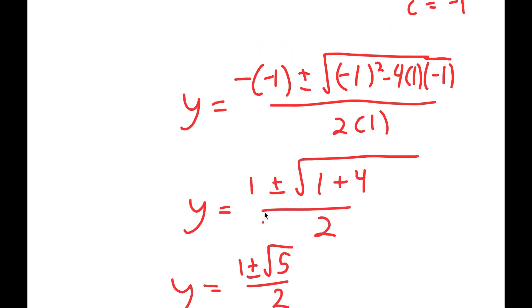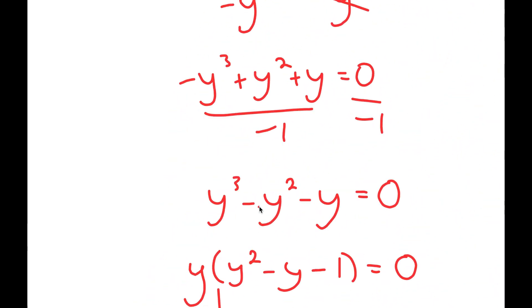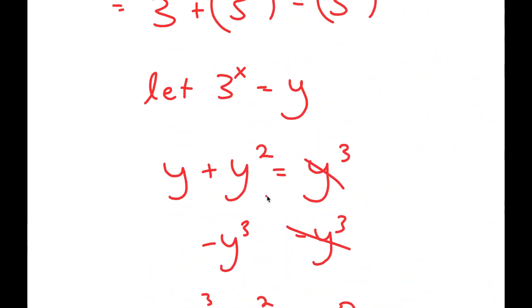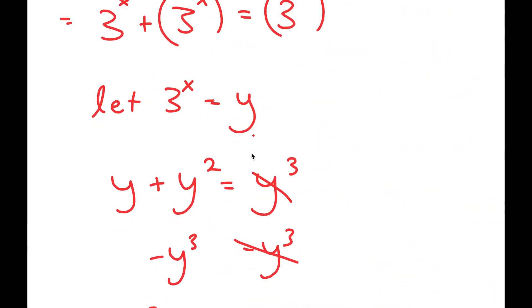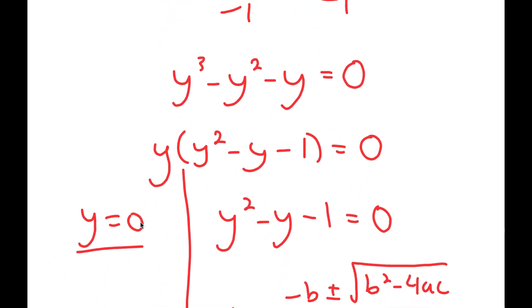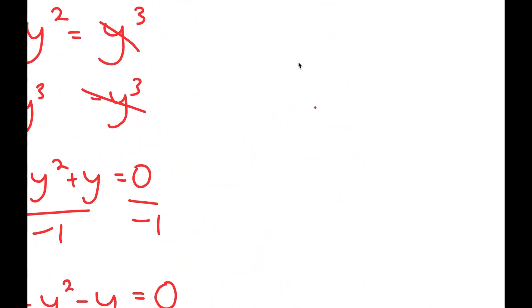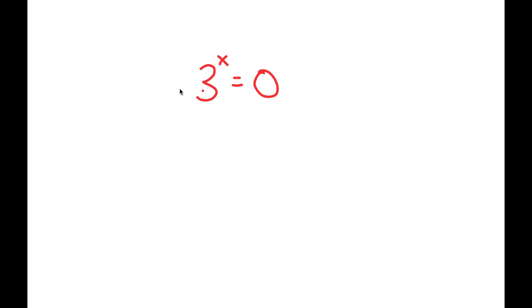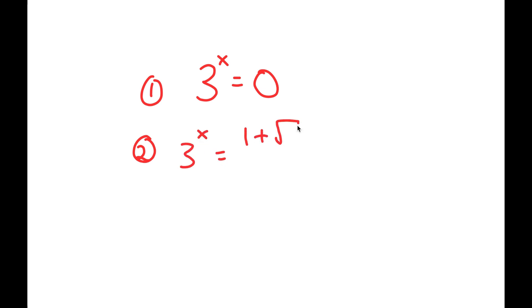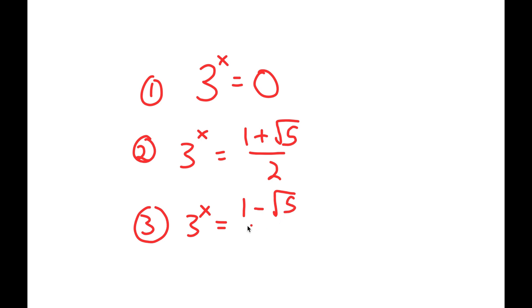These are two more solutions for y. Remember we let 3 to the power of x equal y, so we have three equations: 3 to the power of x equals 0; 3 to the power of x equals 1 plus the square root of 5 over 2; and 3 to the power of x equals 1 minus the square root of 5 over 2.